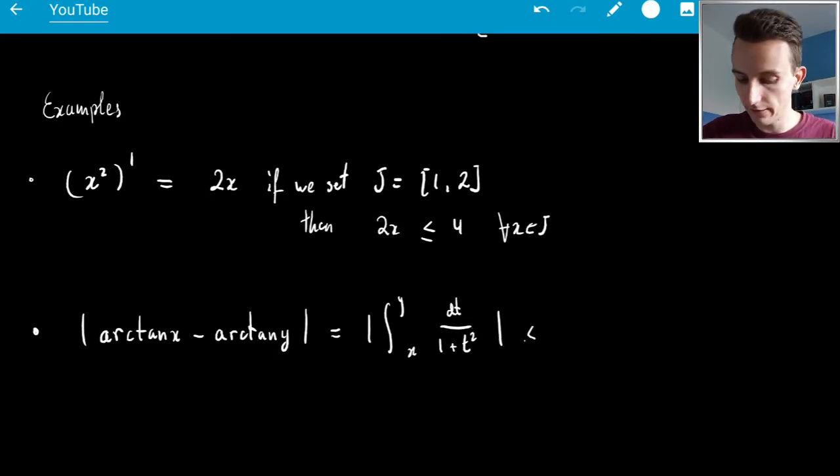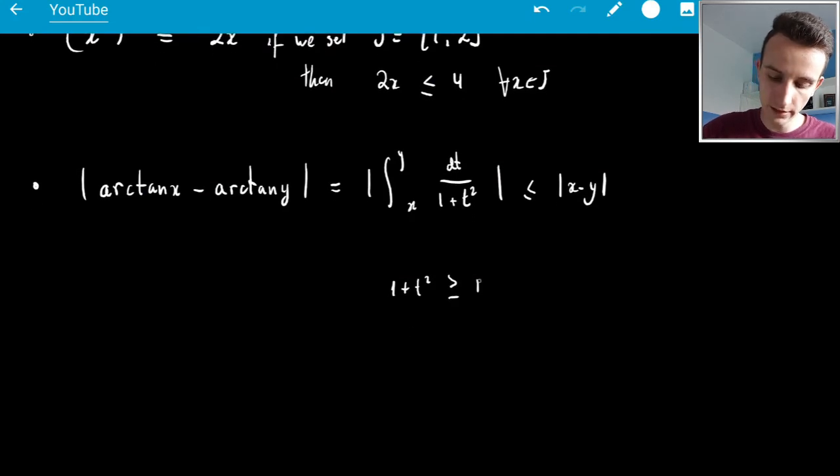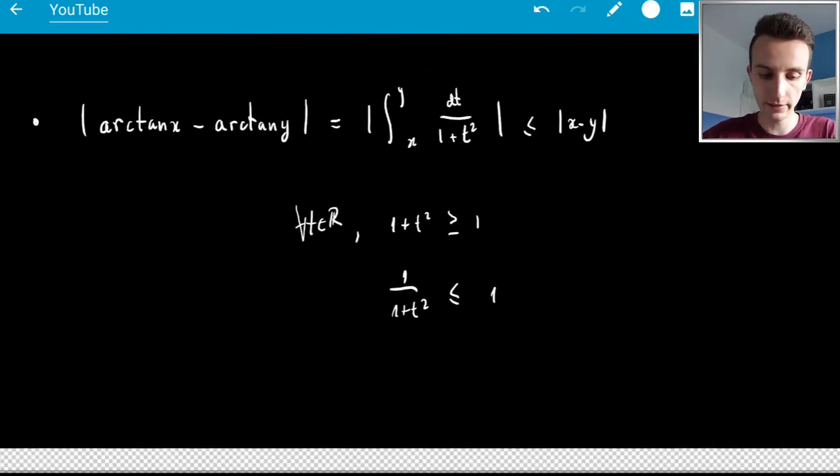and then this is less than or equal to, so the thing in the denominator is greater than or equal to 1, so 1 over it is less than or equal to 1, so this is just less than 1 times |Y - X|, or |X - Y|, okay, let's write |X - Y|. So you see, what I use is 1 + T² is greater than 1, this is for all T, by the way, this is for all T in R, so this one is globally Lipschitz continuous, and so 1/(1 + T²) is less than or equal to 1, and that's how I just took out the |X - Y| and bounded this 1/(1 + T²).